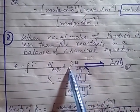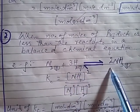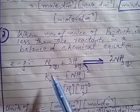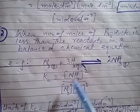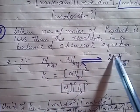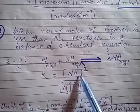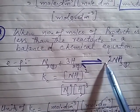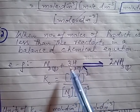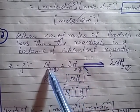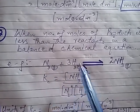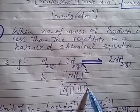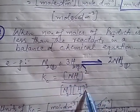Nitrogen reacts with three moles of hydrogen and they form two moles of ammonia. So, how will we establish Kc? Again, let's see here. First, you write the product — this is the concentration of the product — and then the exponents go into the power. Then this is nitrogen, this is the concentration of nitrogen, this is the concentration of hydrogen. Again, the number of moles will go into the power.